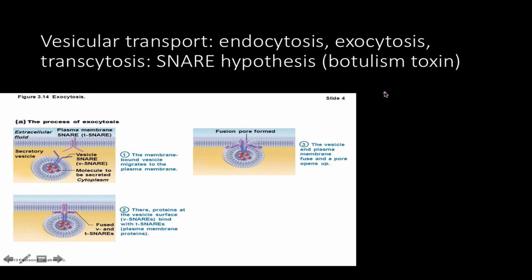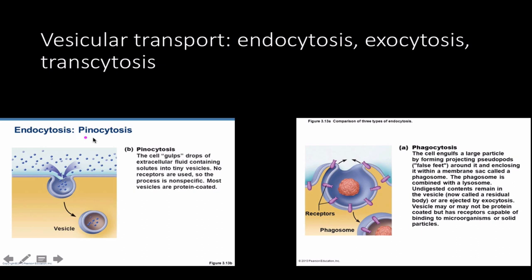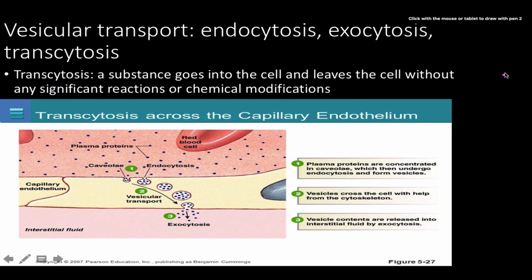The SNARE proteins are important because botulinum toxin is thought to inhibit SNARE proteins from interacting with each other, which inhibits exocytosis of neurotransmitters. Pictures here show pinocytosis bringing in fluid and receptor-mediated phagocytosis, where pseudopodia — formed through actin filaments — engulf a target. Transcytosis is different: something enters the cell and leaves that cell without any chemical reaction or modification happening to it.